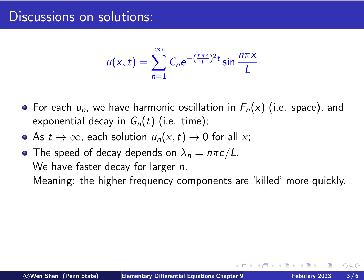So what does this mean for the eventual solution is that the high frequency components in the initial data are decayed, or we say killed, much more quickly than the lower frequency ones. So after some time, let this decay happen for a bit, then what remains in the solution, the dominant terms in the solution, would be the terms with the small n.